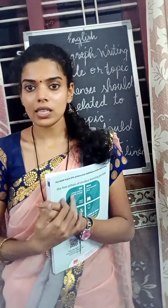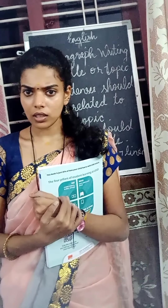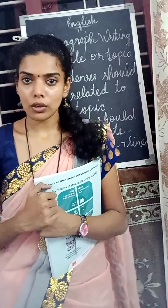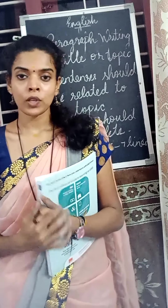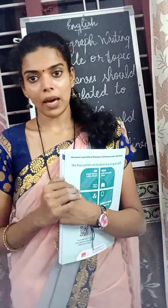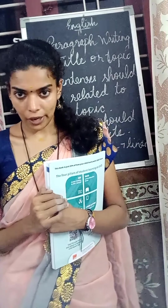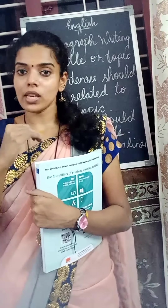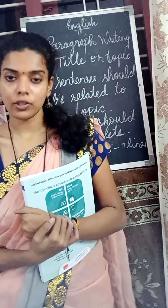In irregular verbs, the verb is completely changed into another word while the tense is changed. For example, 'think' — the past tense of 'think' is 'thought', which is another word entirely. The second topic is paragraph writing. Paragraph means a complete set of sentences arranged in a particular correct order which gives information about a specific topic. While writing a paragraph, we need to remember four points: first, the paragraph should contain a title or topic; second, sentences should be related to the topic and not irrelevant; third, sentences should be complete; fourth, it should contain five to seven lines.